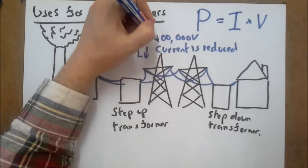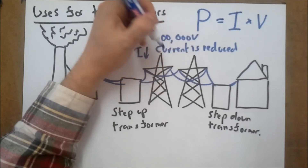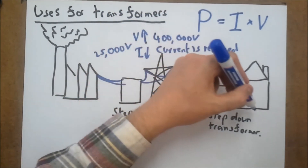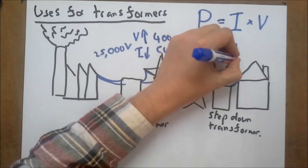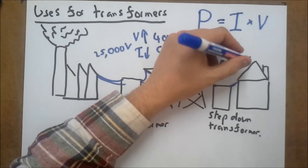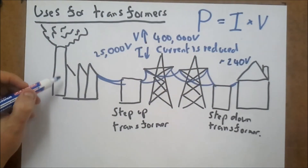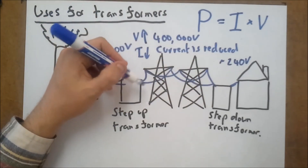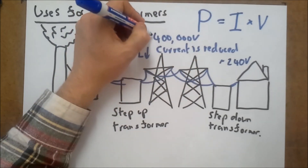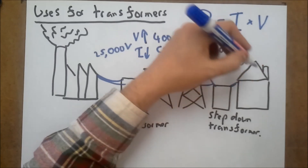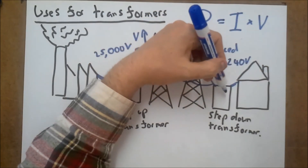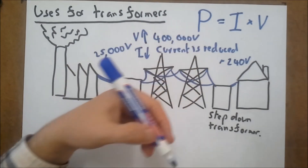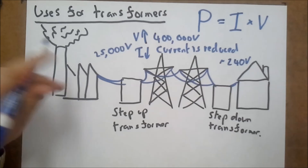You definitely don't want something like 400,000 volts coming into your house. So when you get to a residential area, the voltage will realistically go through a number of step-down transformers, and it will eventually be stepped down to something around 240 volts. So going from your power station you've got 25,000 volts, stepped up to the national grid — the current is reduced even though the voltage becomes so much higher — and then finally, when it gets to where it's needed, it's stepped down several times until it gets to your home, reducing the current, reducing the heat produced, and making the system more efficient.